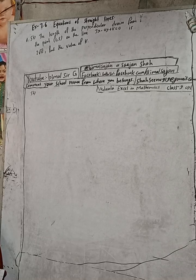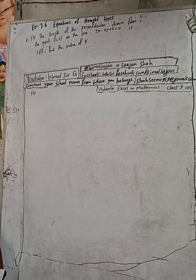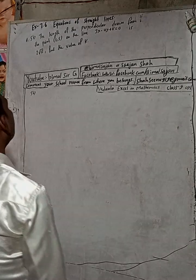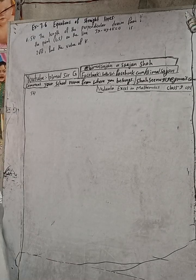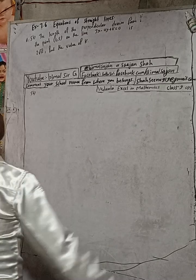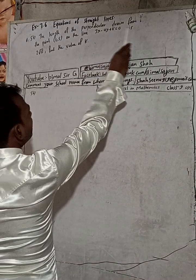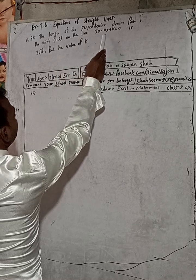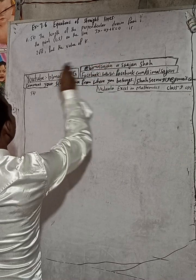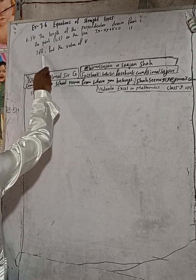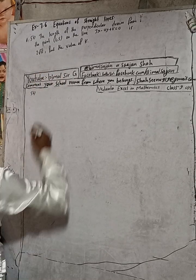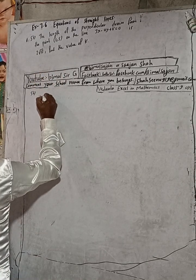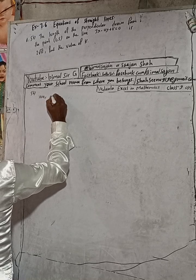Hi Class 9 and 10 students, welcome back to Bimal Sarji's YouTube channel. This is Question Number 5b, Exercise 7.6, Equations of Straight Lines, Class 9 Optional Maths. The length of the perpendicular drawn from the point (1, 5) on the line 3x minus 4y plus k equals 0 is 2√13. Find the value of k.